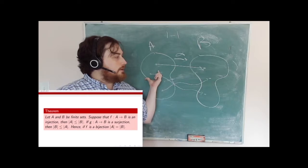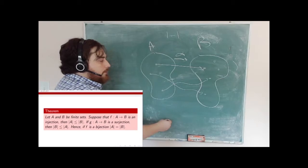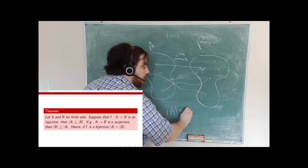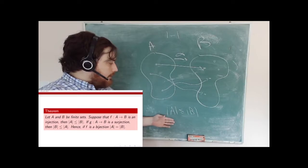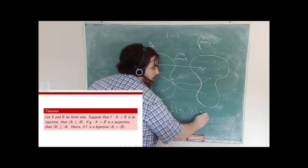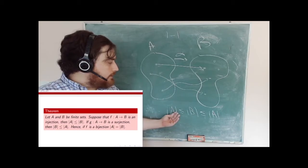There can be more elements in B, because there can be things that don't get mapped to. But we do have to have that if we have a one-to-one mapping from A to B, the cardinality of A has to be less than or equal to the cardinality of B. Now if we combine that together and we have a one-to-one onto mapping, because it's one-to-one the cardinality of A is less than or equal to B, and because it's onto the cardinality of B is less than or equal to A. Therefore, if we can find a one-to-one onto mapping, these cardinalities have to be the same.